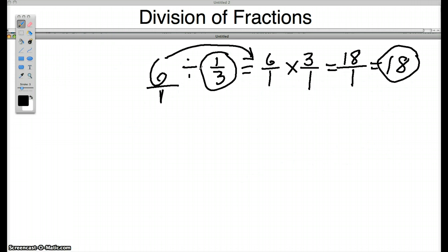And if you really think about it, that makes sense. How many 1/3s are there in 6? Well, there's 3 one-thirds in every whole. And so there are 18 one-thirds in 6 wholes.